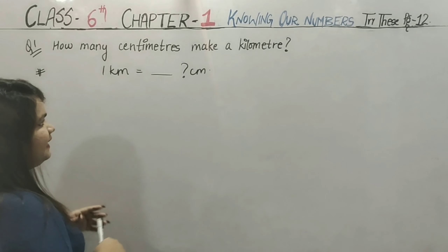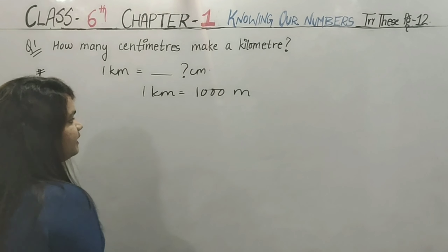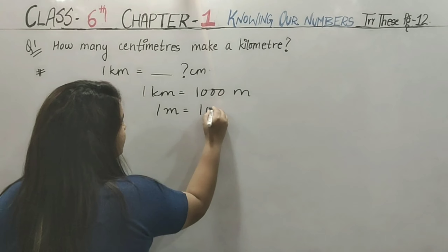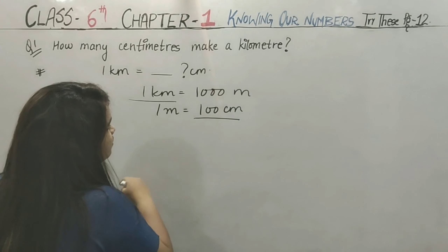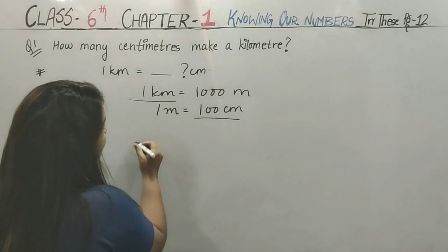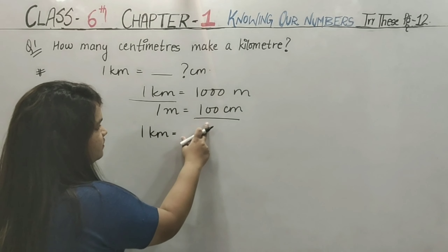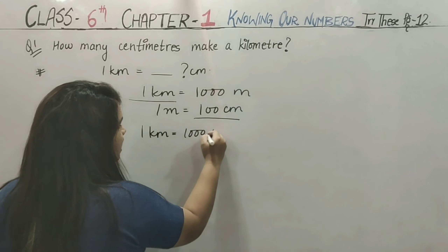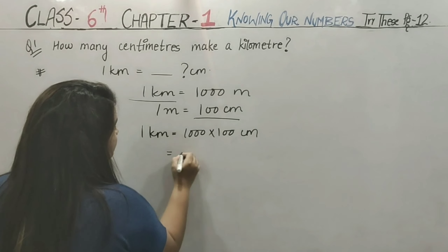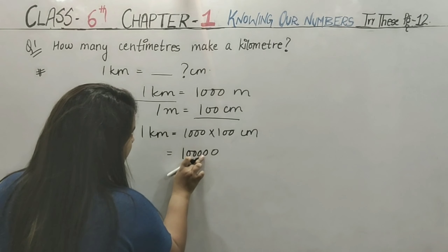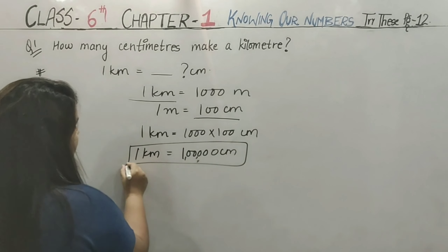So first, how many meters are in 1 kilometer? 1 kilometer equals 1,000 meters. And how many centimeters are in 1 meter? 100 centimeters. So to find how many centimeters are in 1 kilometer, we multiply 1,000 by 100. That gives us 1,00,000 centimeters. So 1 kilometer is equal to 1,00,000 centimeters.